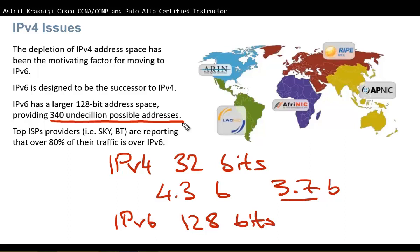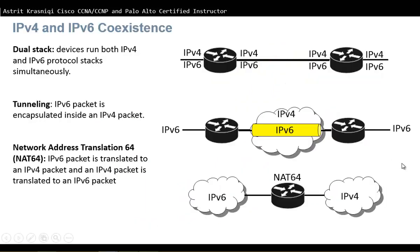Top internet service providers like Sky and BT are reporting that over 80% of traffic is already over IPv6. We're definitely moving to IPv6 very soon, but since there's no fixed transition date, IPv4 and IPv6 have to coexist and work together. All of our devices support two stacks — both the IPv4 stack and the IPv6 stack — and devices that support both are known as dual stack devices.